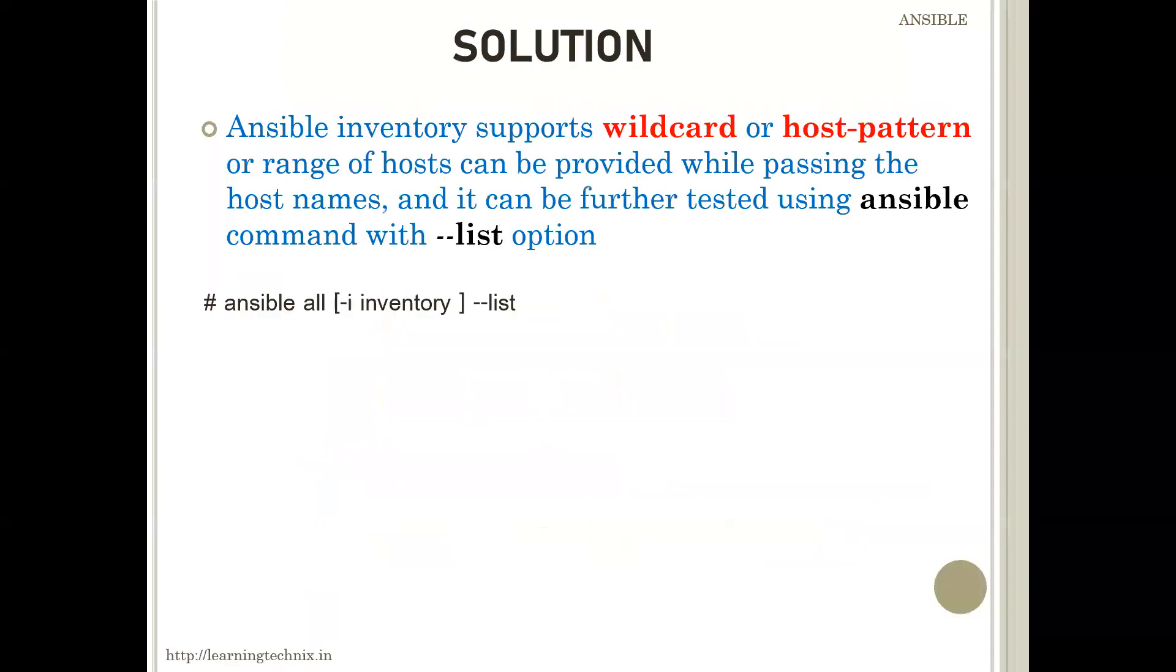If you've read about the Ansible inventory, it supports a lot of wildcards, even host patterns. So we can simply provide the range of hosts. We can even skip some hosts if required. Now, how do you check whatever host or pattern you've put in the inventory will work or not?